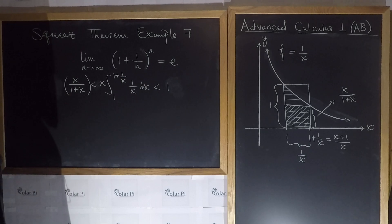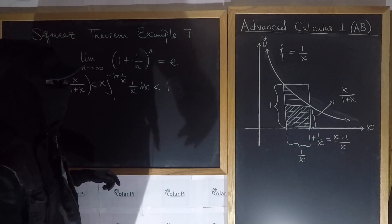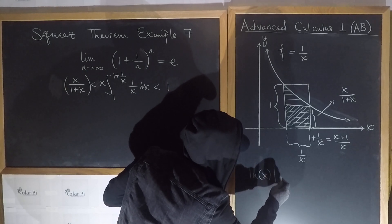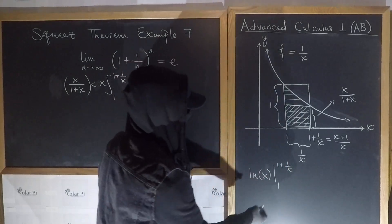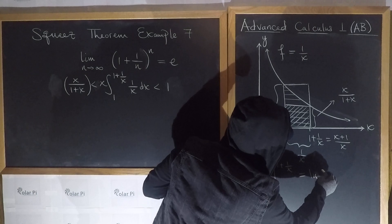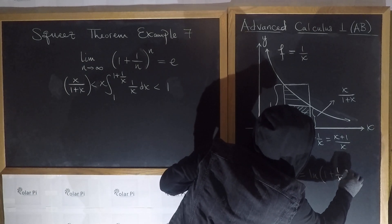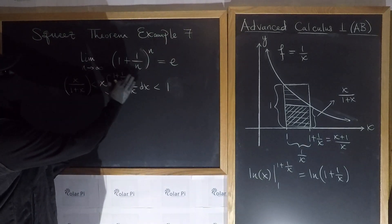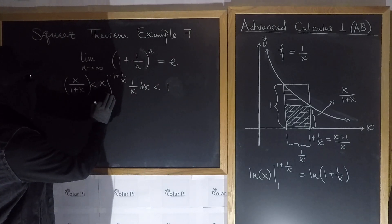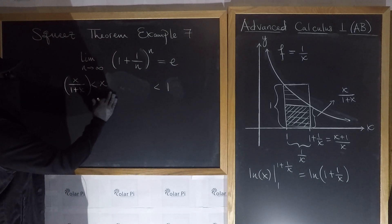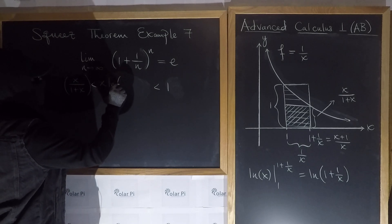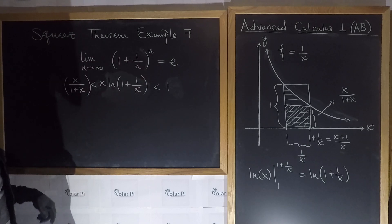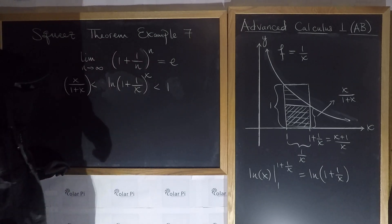The integral of 1 over x is the natural log of x. So the integral evaluates to the natural log of x from 1 to 1 plus 1 over x, which equals the natural log of 1 plus 1 over x minus the natural log of 1, but the natural log of 1 is 0. So the middle part becomes x times the natural log of 1 plus 1 over x. Using logarithm rules, I can put this x as an exponent on top of the argument, writing it as the natural log of 1 plus 1 over x to the x.